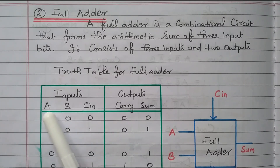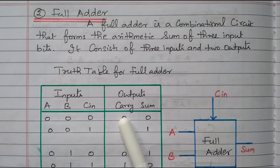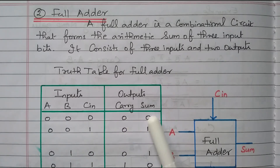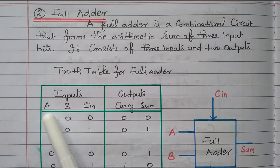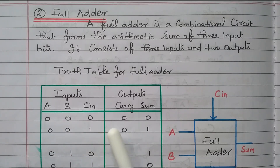While adding A, B and carry-in, again a carry is generated. This is called carry-out, and the result is the sum. So there are two outputs: sum and carry-out. The full adder has three inputs — A, B, and carry-in — and two outputs: carry-out and sum.